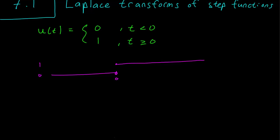We can also write our step function a little differently by writing instead u(t-a) and setting it equal to 0 when t is less than a and 1 when t is greater than or equal to a.